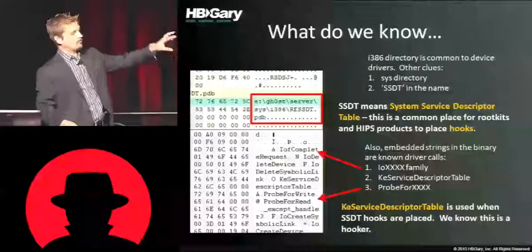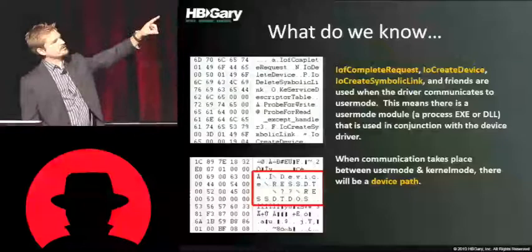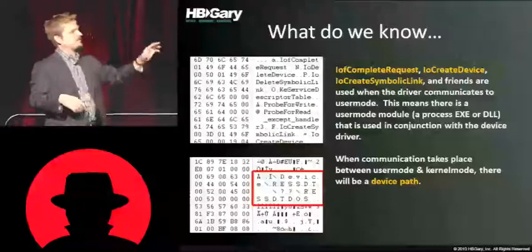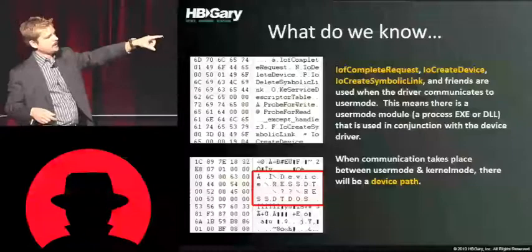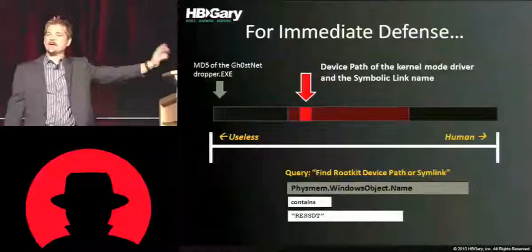I also see IO create device and IO create symbolic link. These functions mean there is both a user mode and a kernel mode component. Drivers have to put a named device path accessible over the file system, and you can see that in Unicode at the bottom of the file — res_ssdt in two different forms. That would be a great scan to run across the enterprise: find any window object named res_ssdt, and you might find all other variants of this particular rootkit currently in your enterprise.